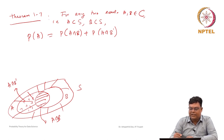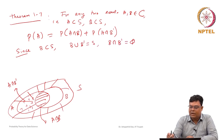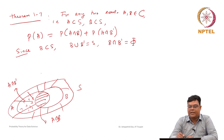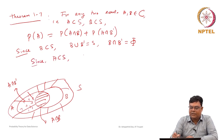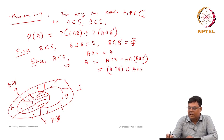How can we prove this analytically? Any event B is a subset of S, so B union B complement is S, and B intersection B complement is the null set. Since A is a subset of S, A intersection S equals A. So A can be represented as A intersection S, which is A intersection (B union B complement). By the distributive property, this is A intersection B union A intersection B complement.